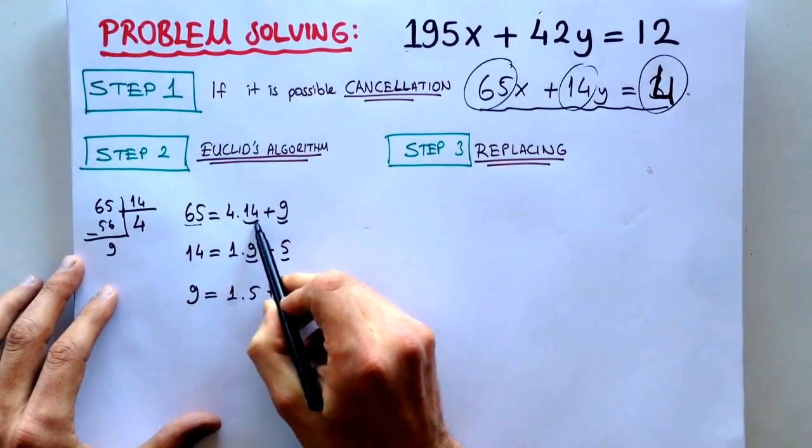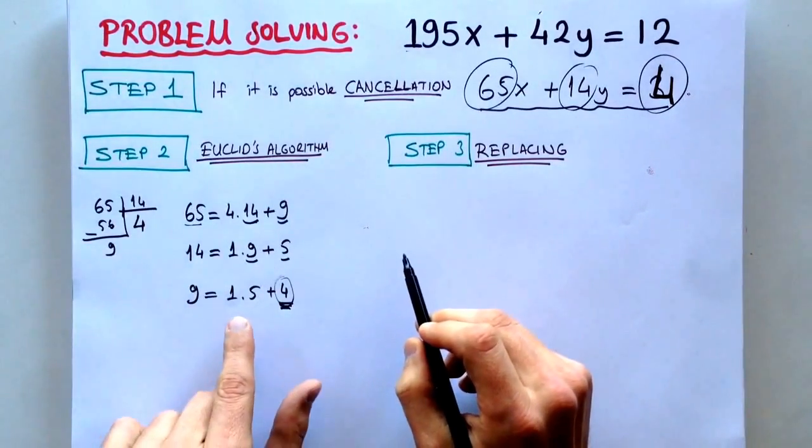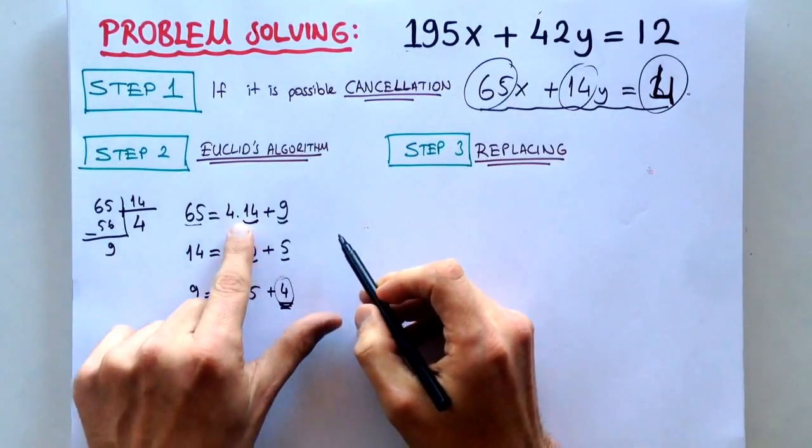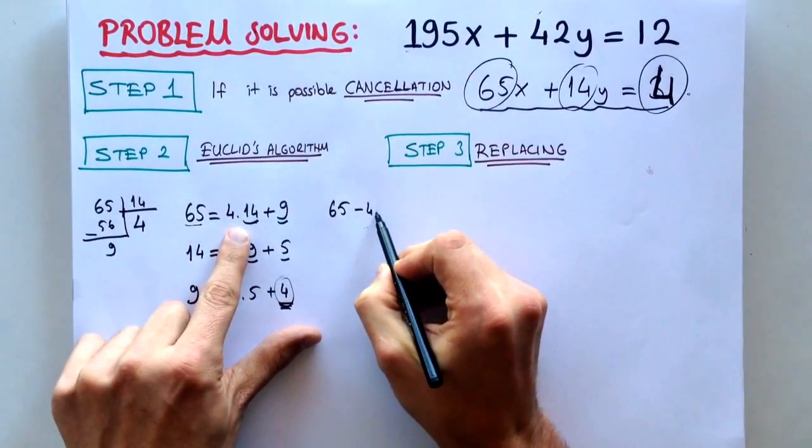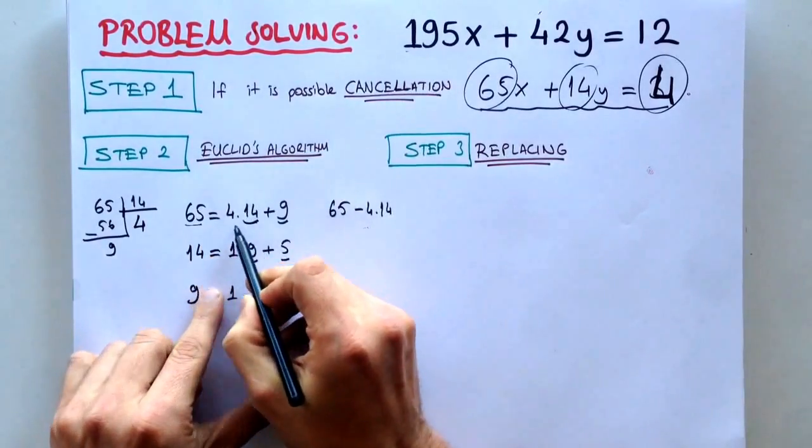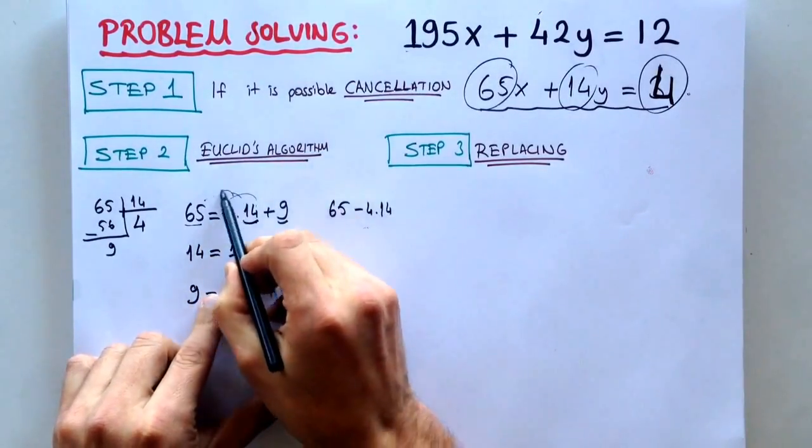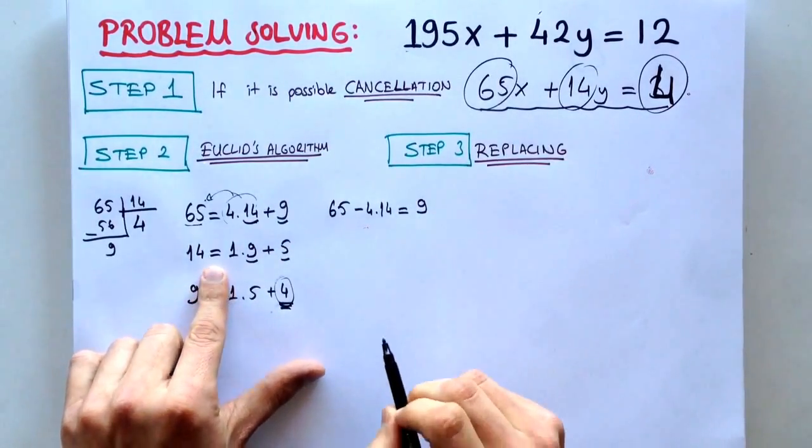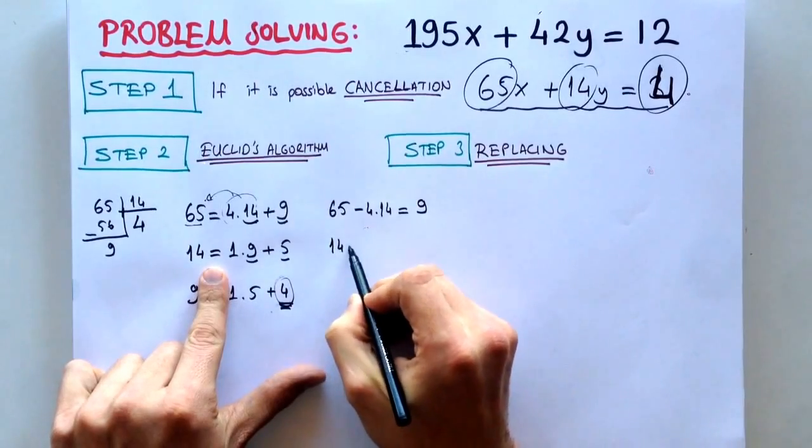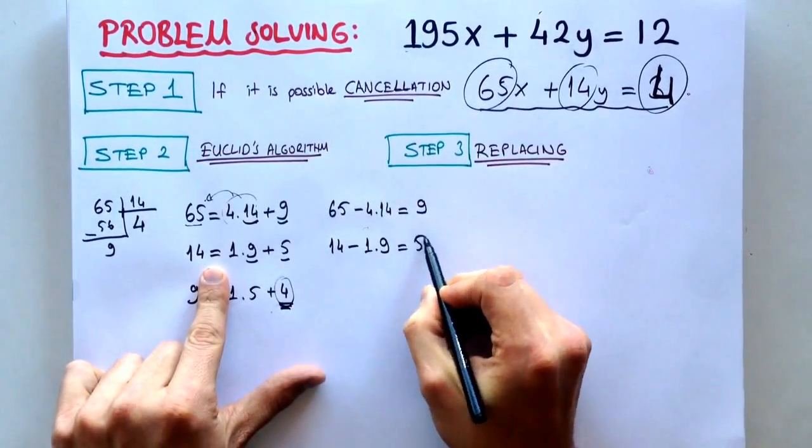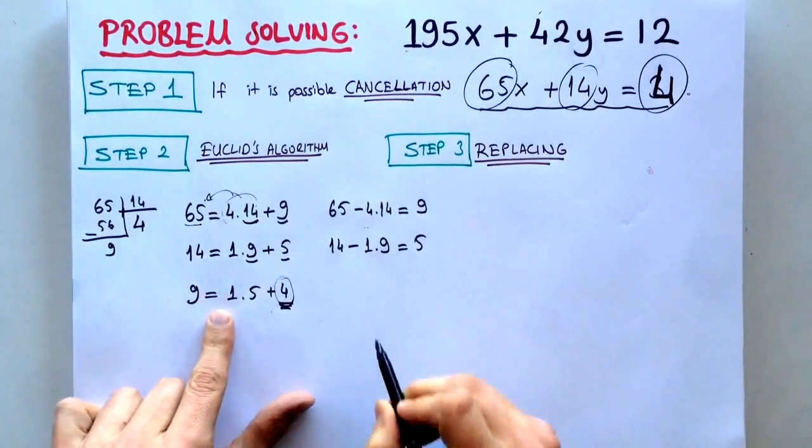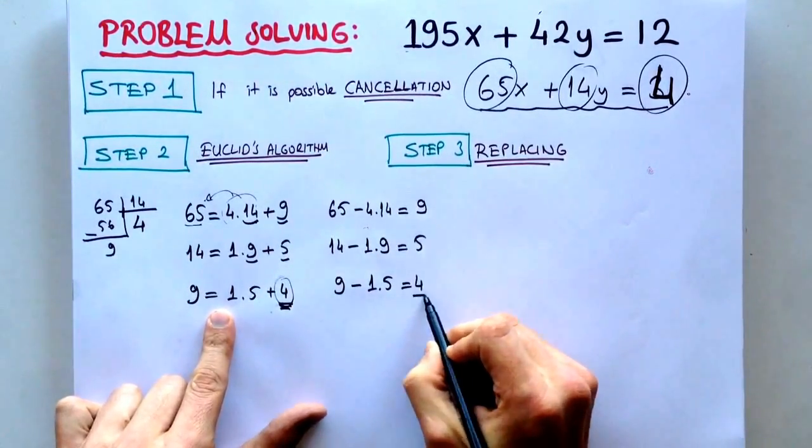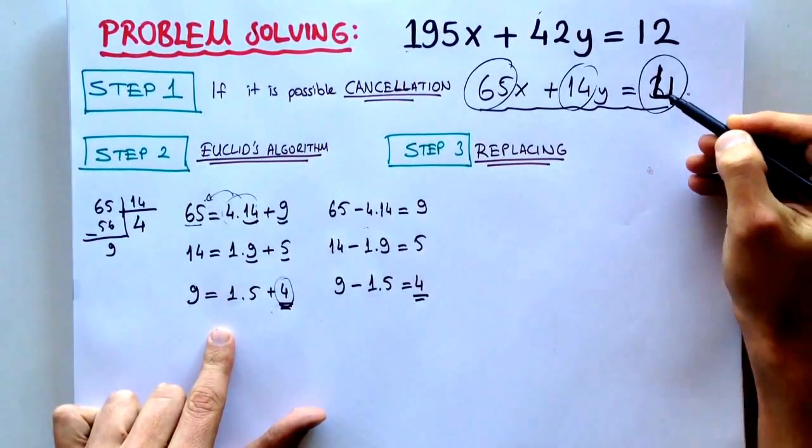Because we have to find 4 in the result of 65 and 14. 65 and 14, we have 4. If we do that reverse with the Euclidean algorithm, if we write them reverse like this, 65 minus 4 times 14, if we put them to the other side, to the left side, we have to conclude with 9. If you do that again here, 14 minus 1 times 9 is equal to 5. If we do that again,